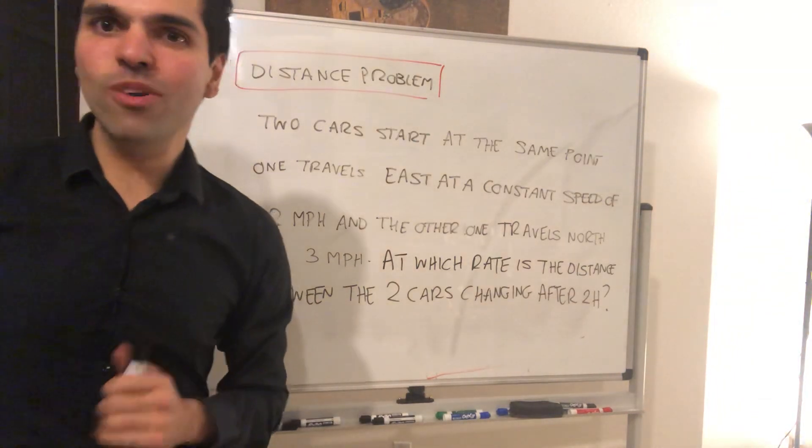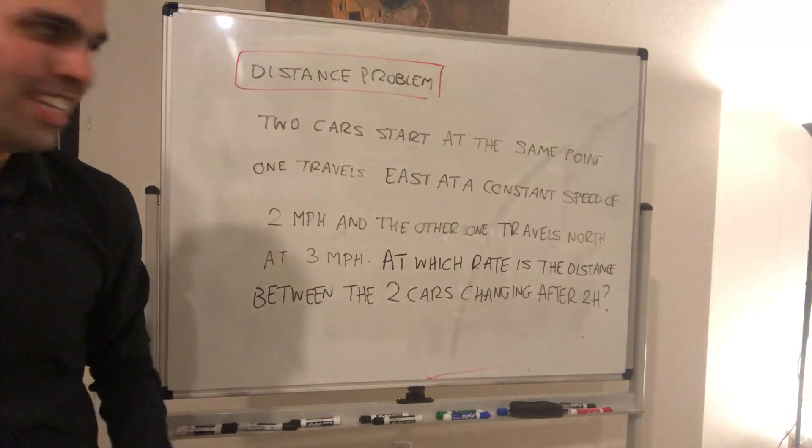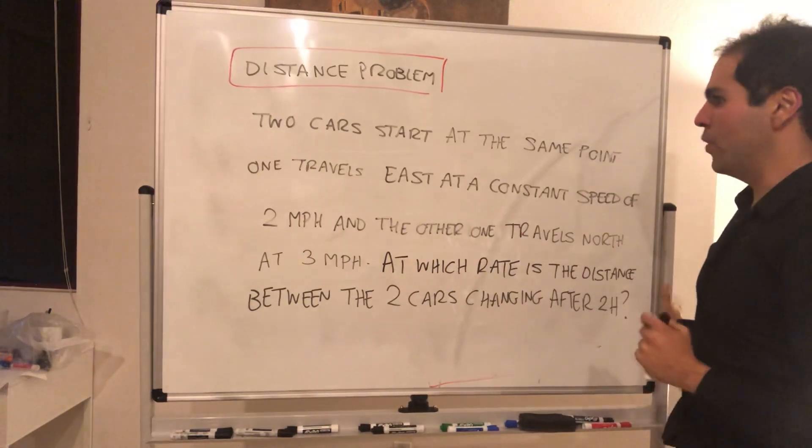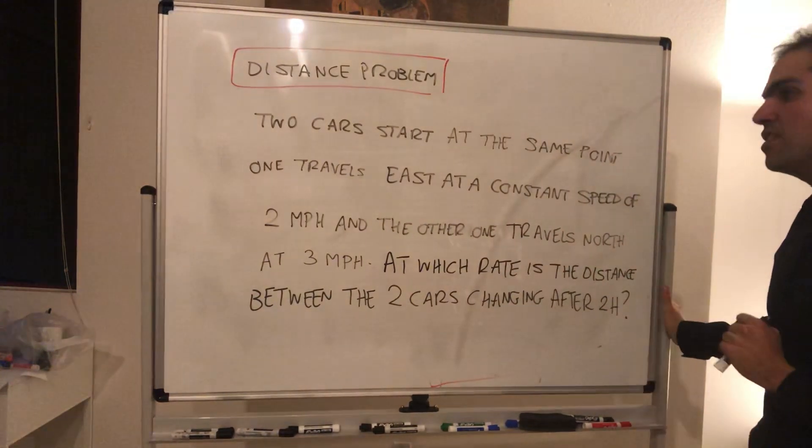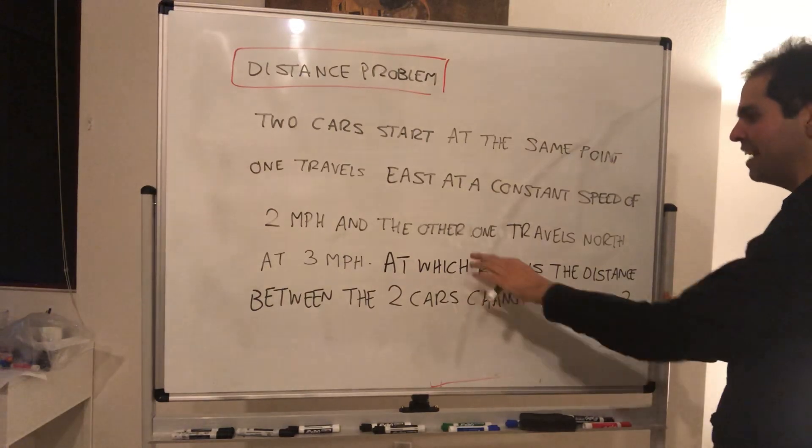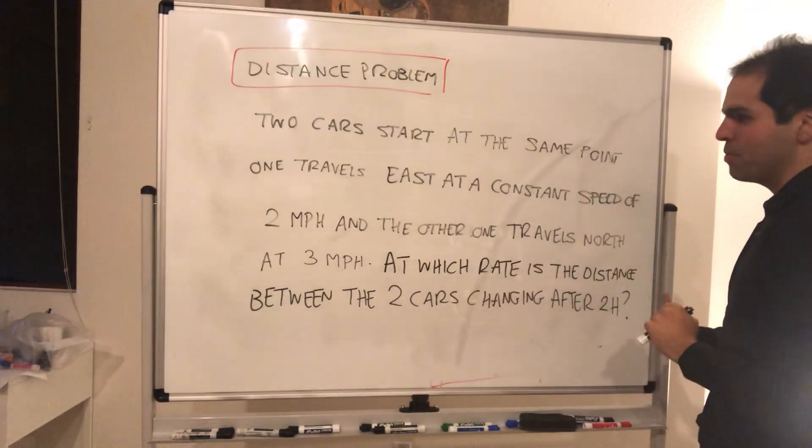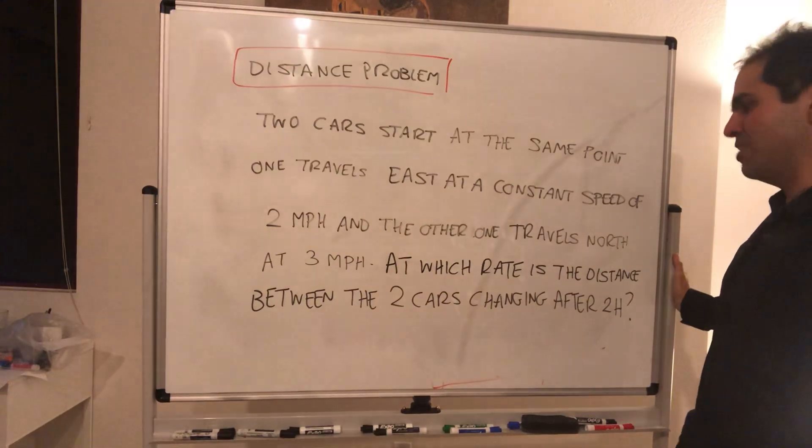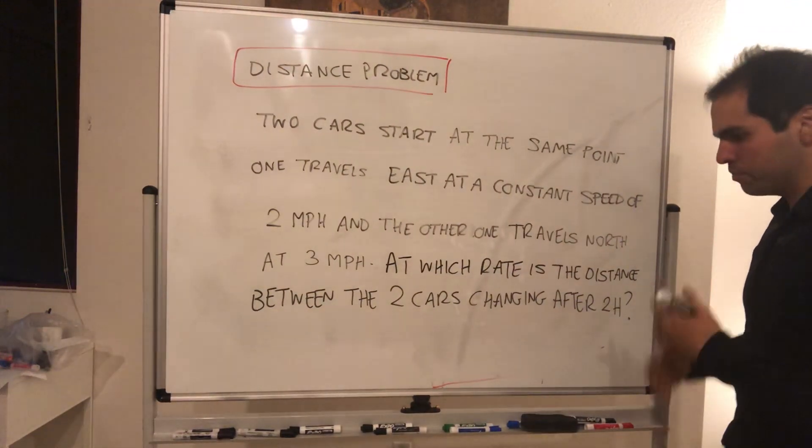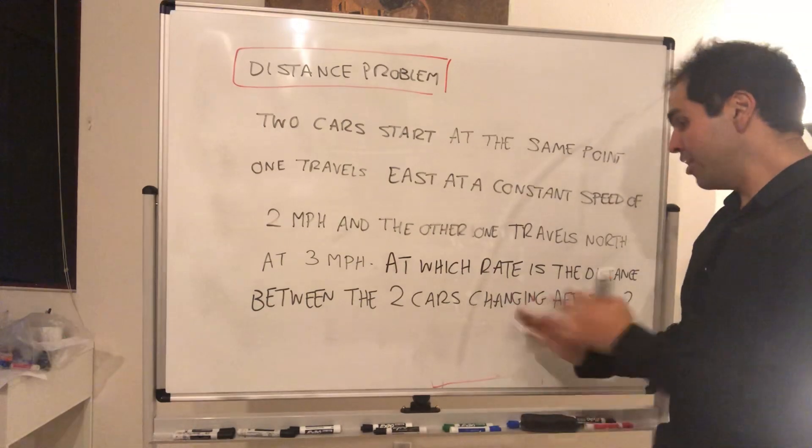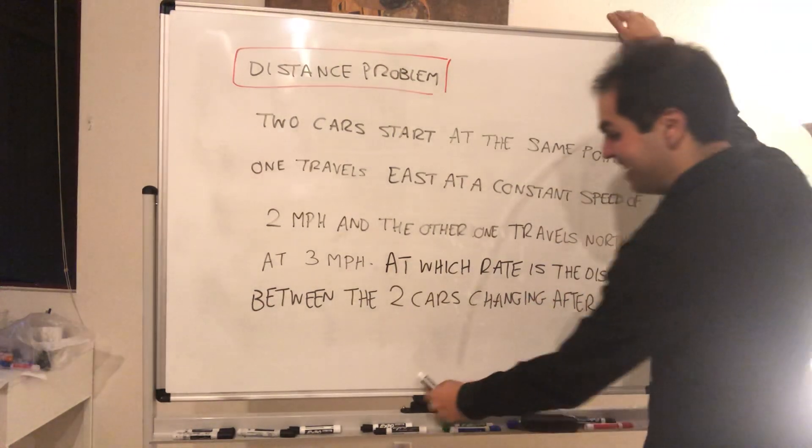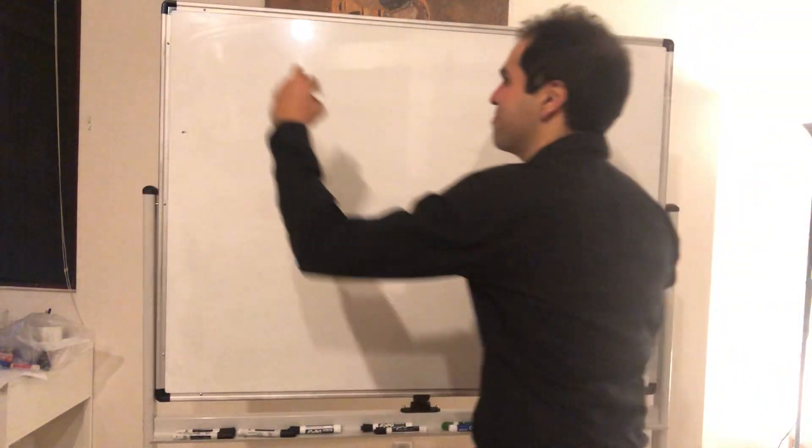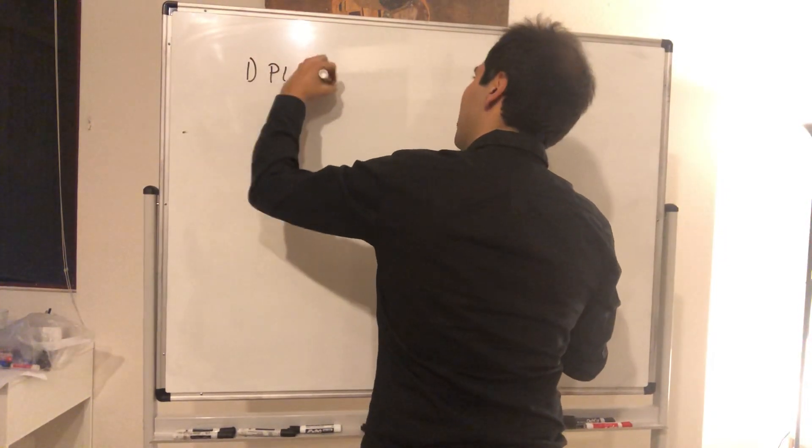All right, thanks for watching. Today we'll cover another fun related rates problem which says as follows: two cars start at the same point, one travels east at a constant speed of two miles per hour and the other one travels north at three miles per hour. Pretty slow cars in my opinion. At which rate is the distance between the two cars changing after two hours? So again, long problem, but let's dissect it with our related rates method. So first of all, it's important you draw a picture.